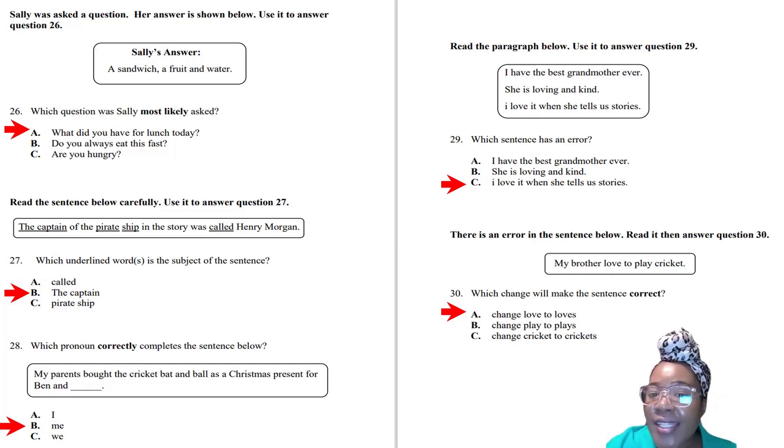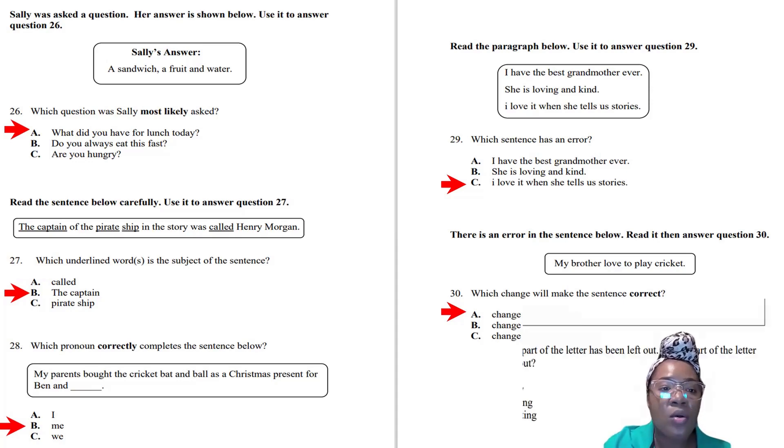We have a paragraph here. As you look at it, you'll see there's an 'I' by itself as a common letter. You know that's incorrect because 'I' by itself must be capital. Then we have an error: 'My brother loved to play cricket.' No, my brother loves to play cricket. You have to study subject-verb agreement again.